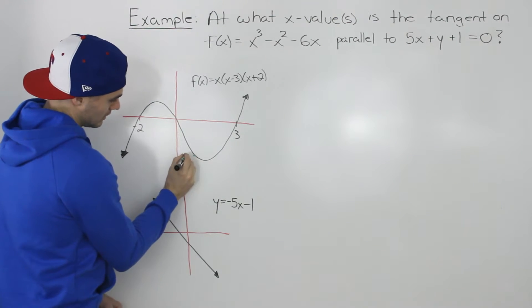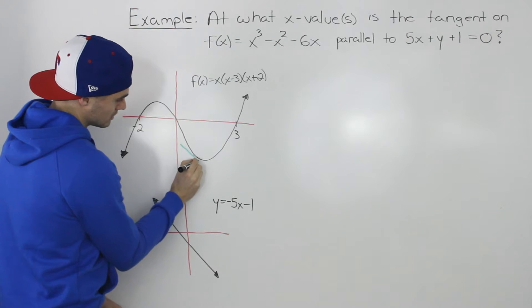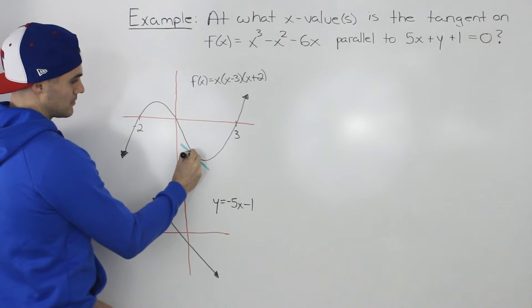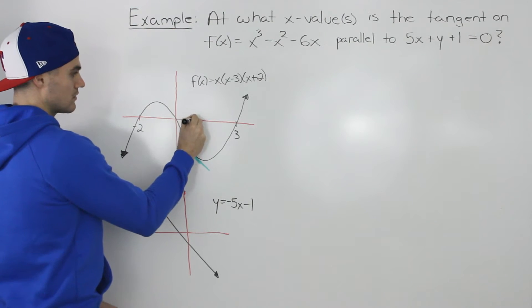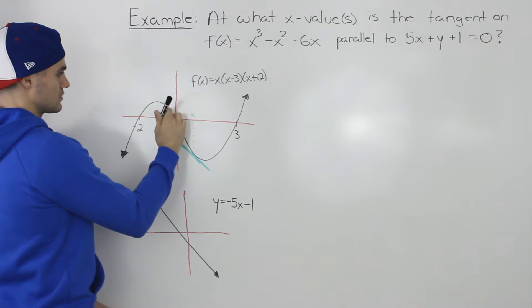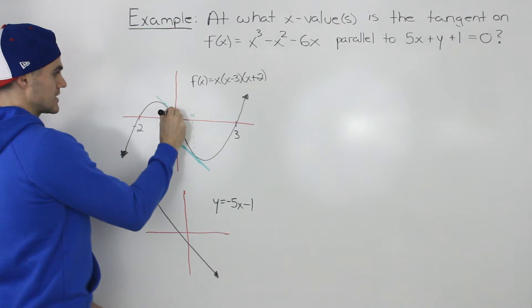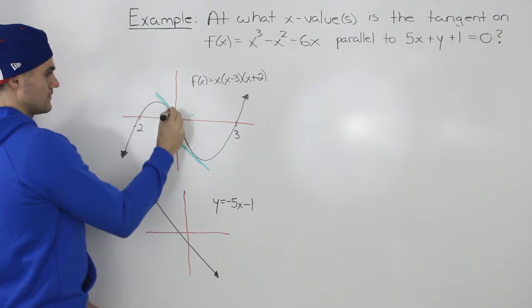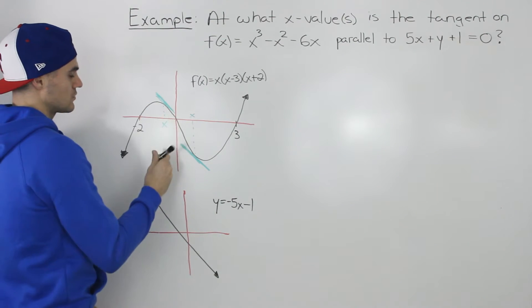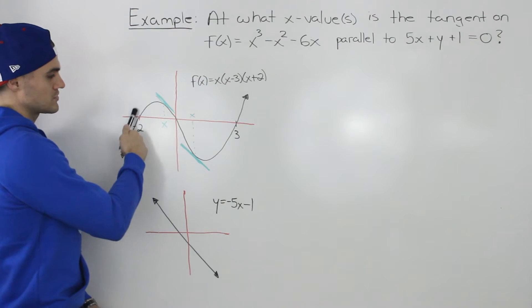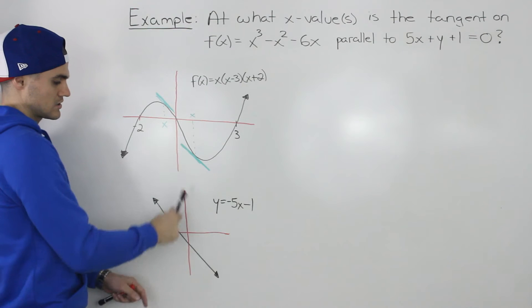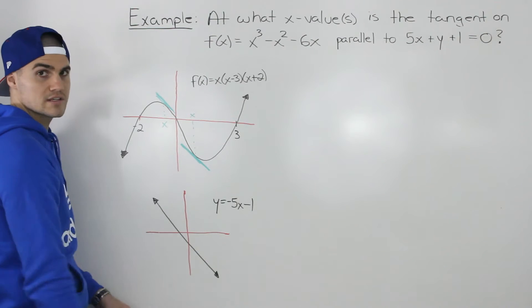So maybe even here — if we draw a tangent there, it's almost parallel to this line. So maybe at this x value would be one place, and perhaps even up here too. If we draw a tangent up there on the function, all three of these lines seem close to parallel. So perhaps there will be two x values on this function for which the tangent is parallel to this line.